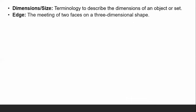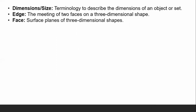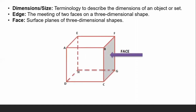Next, dimensions — the term used to describe the size of an object or a given set. Edge is the meeting of two faces on a three-dimensional shape. Face refers to the surface planes of three-dimensional shapes. For example, the flat side of a cube is called a face, and the line where two faces meet is an edge.